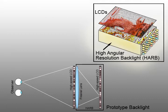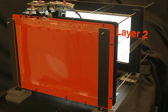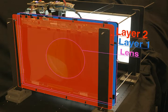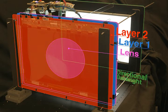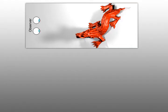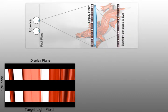We constructed a prototype display consisting of two modified LCD panels, a Fresnel lens, and an additional monitor. The rear monitor and lens emulate a thin HAR backlight in this prototype. For compressive image synthesis, we render a light field showing a 3D scene from multiple perspectives over the two pupils of a human observer. The prototype has an LCD in front of a lens with a backlight conjugate to the pupil plane of the observer.